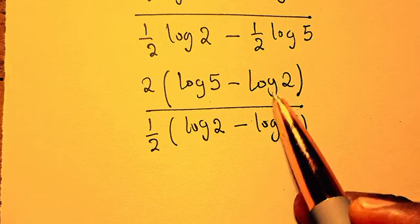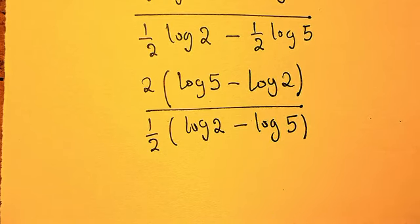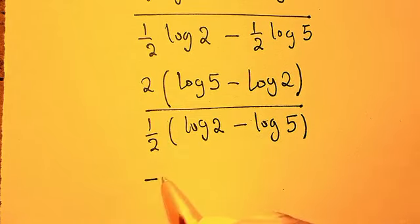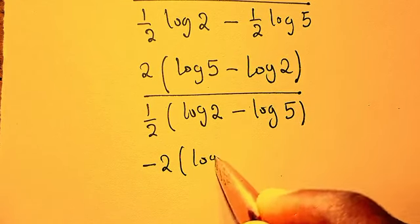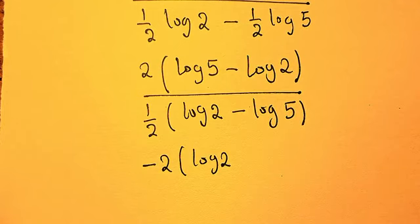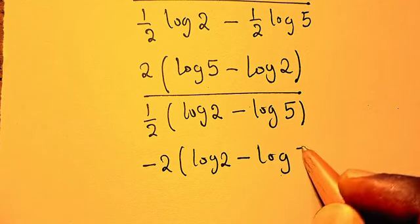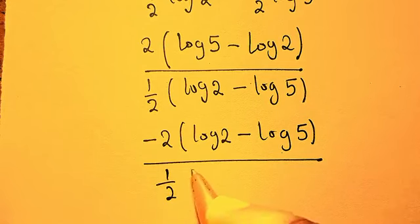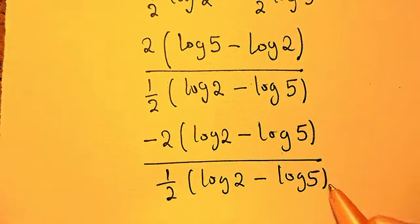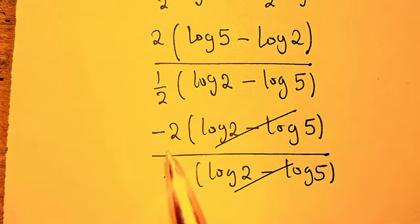I have log 5 minus log 2 here and I have log 2 minus log 5 here. So there's a way I can make these two inside the parentheses equal by having minus outside like this. 2 into bracket, I will take this log first - log 2, you see that it doesn't change anything. Then I have minus log 5, then divided by 1 over 2 log 2 minus log 5. Are you getting it now? So from there you can see that this we now cancel this.